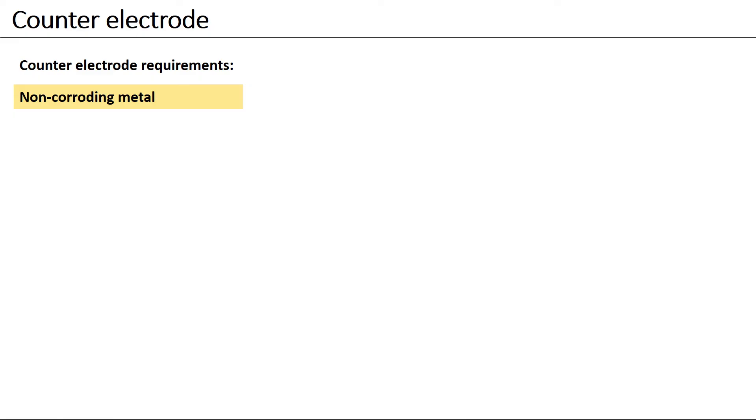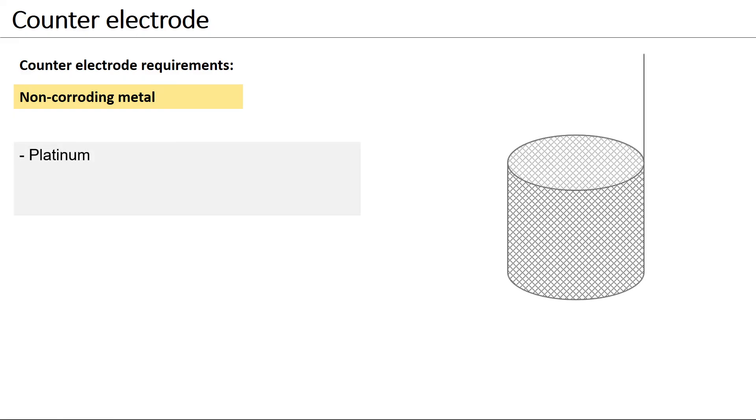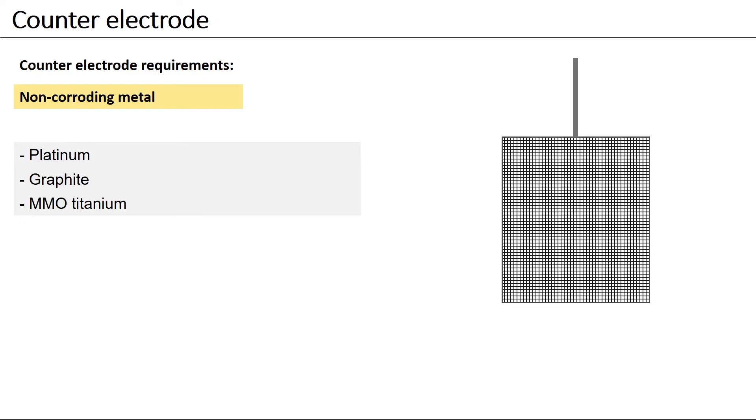Ideally, a counter-electrode is a non-corroding metal. Typical materials used as counter-electrodes are noble metals such as platinum. Also graphite or mixed metal oxides on titanium are used.